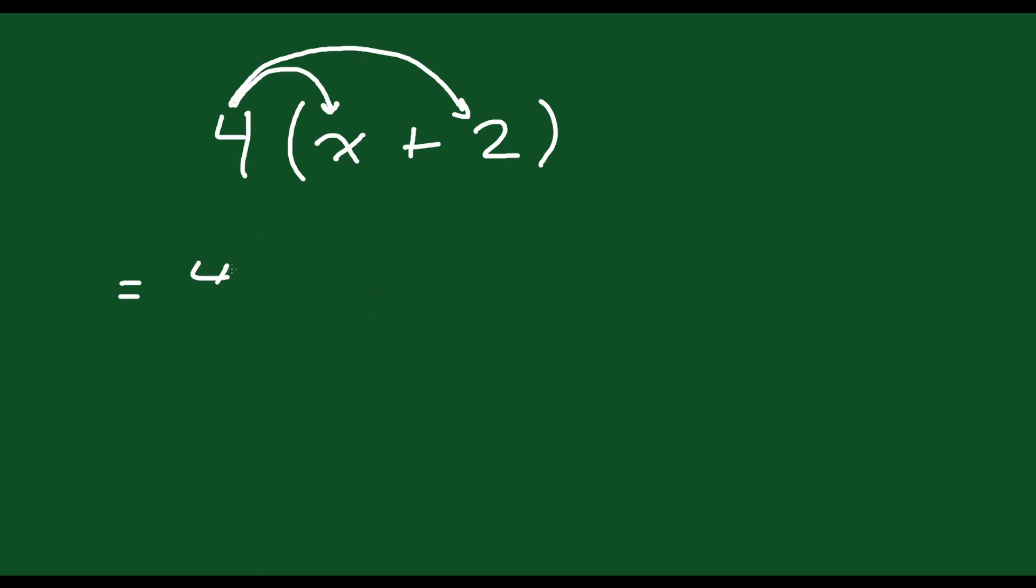Well, 4 times x is 4x plus 4 times 2. Then you can simplify that and say this equals 4x plus 8. So that's how you distribute a number into a binomial. You just multiply it by one term and then the other term.